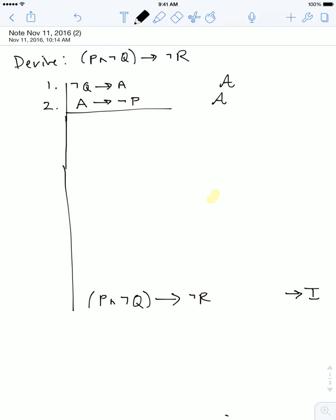So, since I'm anticipating that my last step to get this sentence is going to be a conditional introduction, I know that I have to have as my first step an assumption which is going to be the assumption I need for the conditional introduction. Namely, I need to assume P and not Q.